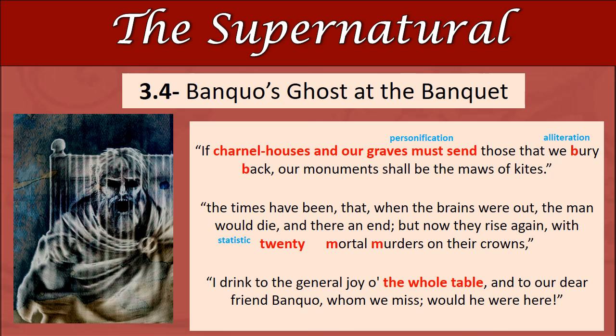"I drink to the general joy of the whole table, and to our dear friend Banquo, whom we miss — would he were here." The phrase "the whole table" is exaggeration — Macbeth is trying to mask the fact that he's going through a crisis by flattering everybody. This is his reaction to the supernatural: going a bit too ostentatiously normal. But of course there is some beautifully crafted dramatic irony, because directly after this line the ghost reappears — "our dear friend Banquo, whom we miss, would he were here" — and then enter ghost. I do think the supernatural in this scene, although highly dramatic and entertaining, is a little bit tongue-in-cheek in places, because don't forget this is a play meant to be performed on stage.